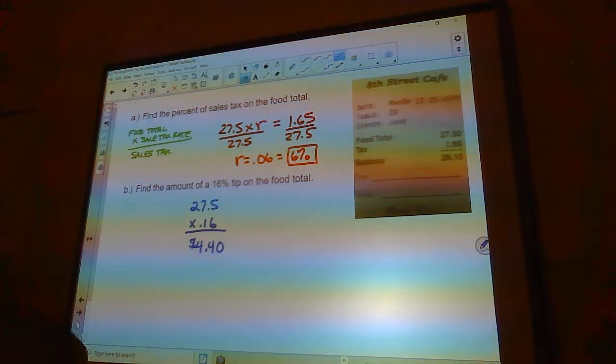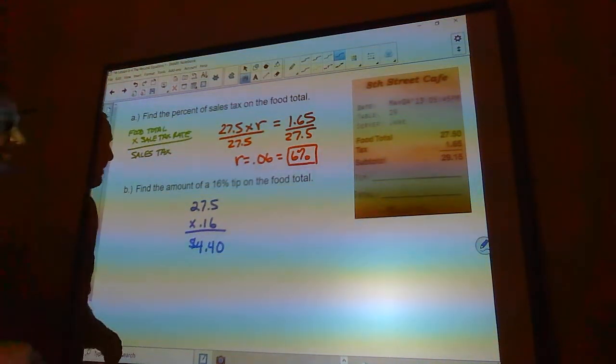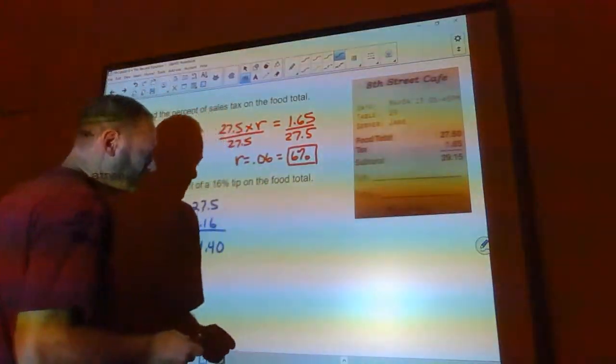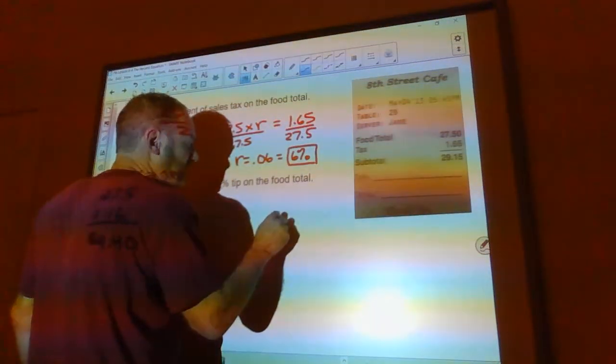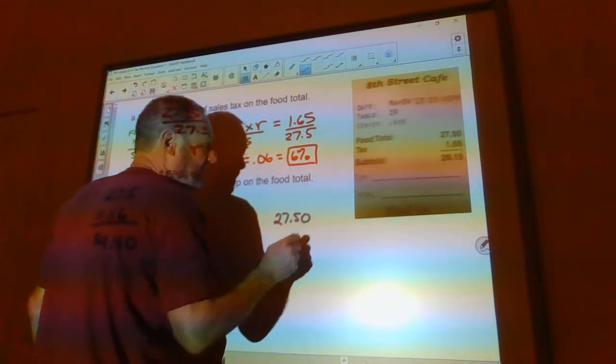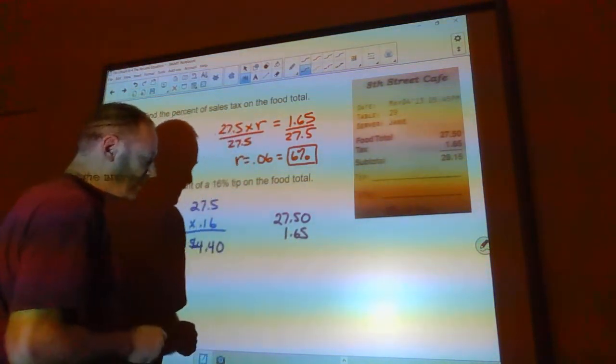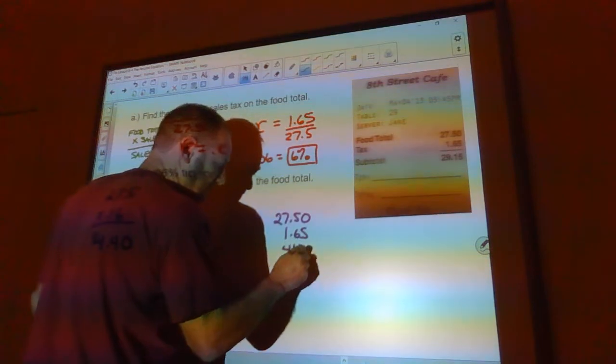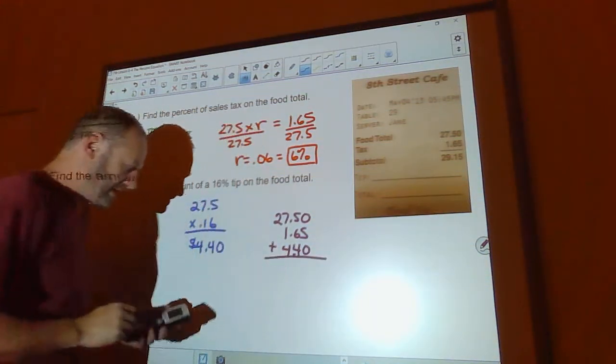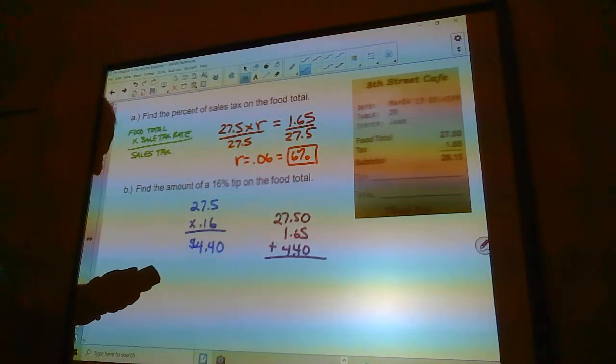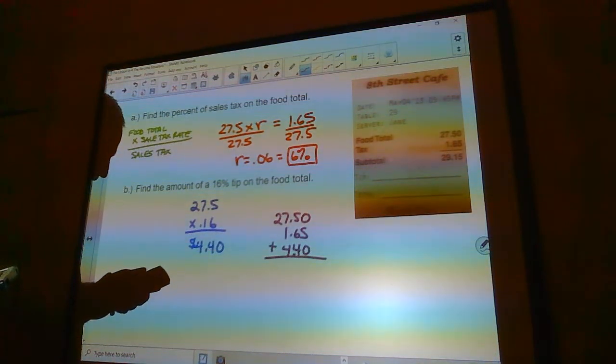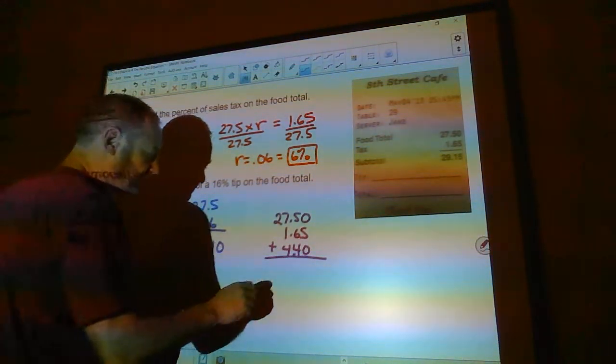So the next question would be, what did this thing cost me? Well, that would be the food total. So that would be $27.50 plus the tax, which is $1.65, plus the tip is $4.40. So I would add all that up, 27.5 plus $1.65 plus $4.40, so $33.55.